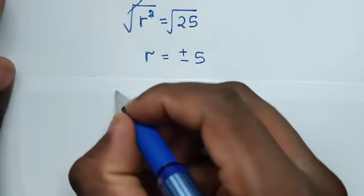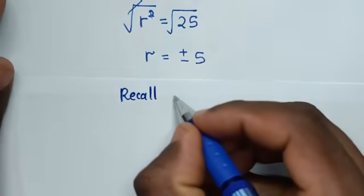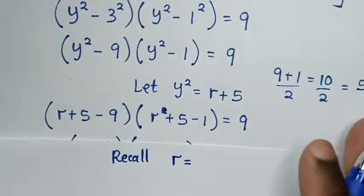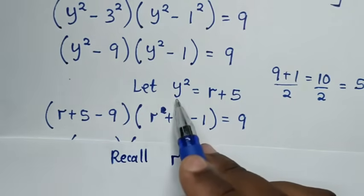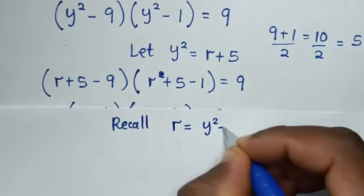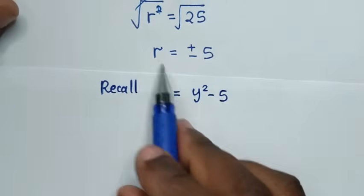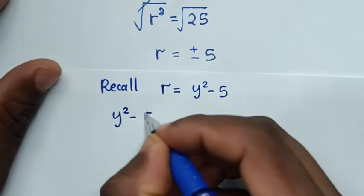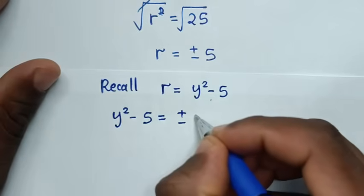Recalling that y² = r+5, we get r = y²−5. Substituting back, y²−5 = ±5, giving us two solutions.